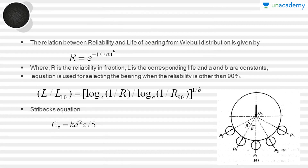The relation between reliability and bearing life from the Weibull distribution is given by R equals e to the power of minus (L/A) to the power of B, where L is the bearing life, and A and B are constants. The equation used for selecting a bearing when the reliability is other than 90% gives the relation between L and L10 and also between R and R90. Using this relation, we can find the bearing life for reliability greater than or other than 90%, which is required in situations where human safety is concerned.